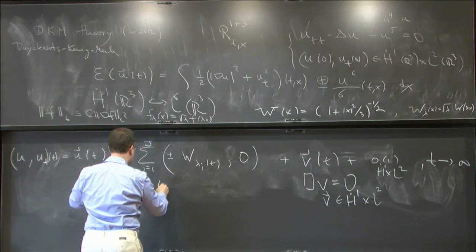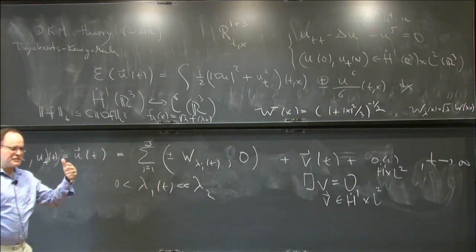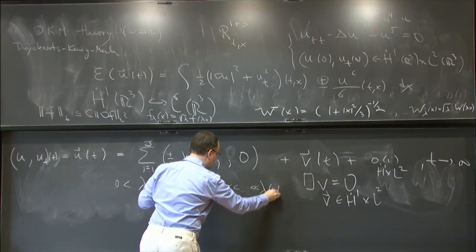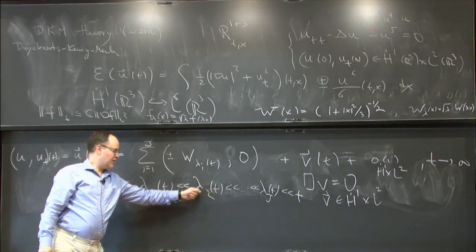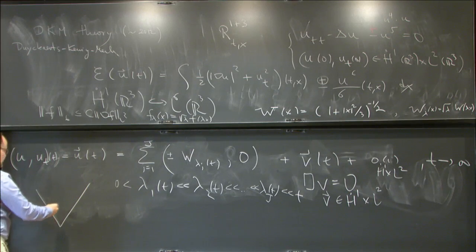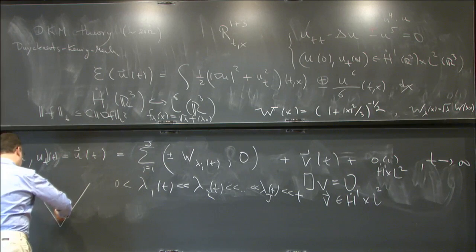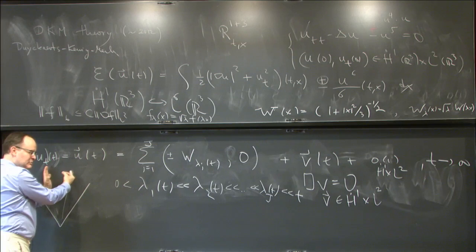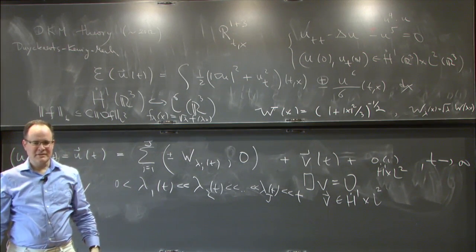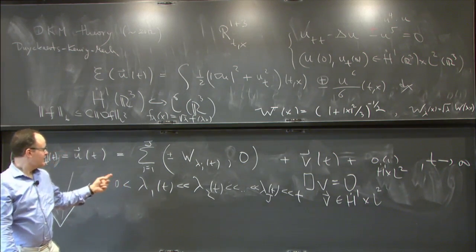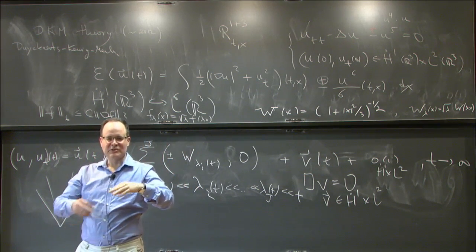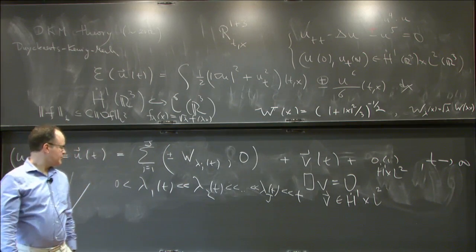The λ_j's are all positive and asymptotically orthogonal — meaning if you divide one by another, you get zero as t → ∞. So if you draw a reverse light cone, these profiles — called bubbles — expand (if they expand at all) much more slowly than light speed. All you know is that ratios λ_j/λ_k → ∞ as t → ∞ when j ≠ k.